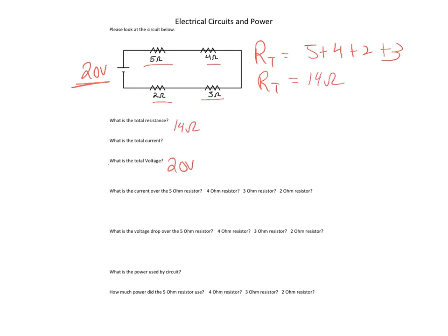Total voltage is 20 volts, because that's the voltage given. Then total current is found using Ohm's Law — V equals IR, so 20 equals I times 14. Therefore, 20 divided by 14 equals 1.43 amps.